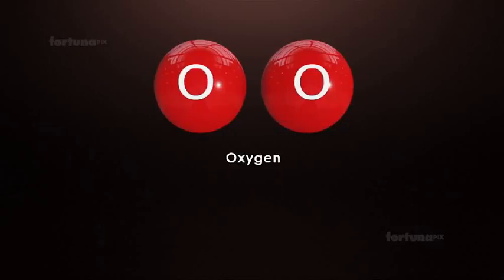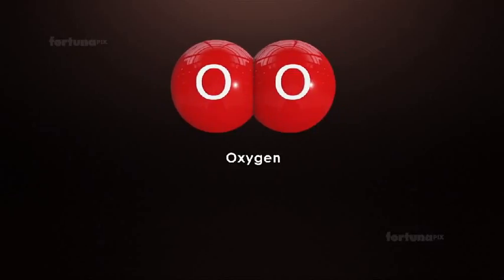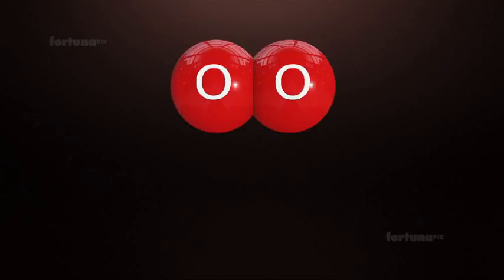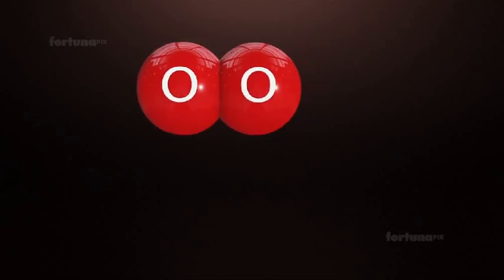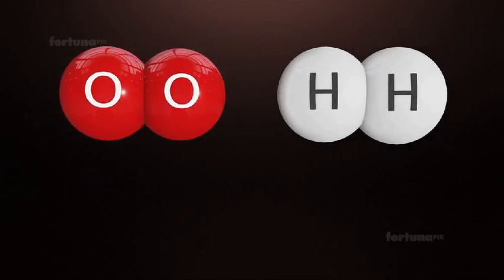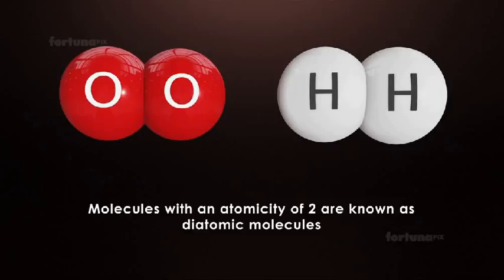Since a hydrogen molecule contains 2 atoms of hydrogen, its atomicity is 2. An oxygen molecule is composed of 2 oxygen atoms, so its molecular formula is written as O2. This means the atomicity of oxygen is 2. Molecules with an atomicity of 2 are known as diatomic molecules. Both oxygen and hydrogen are diatomic.